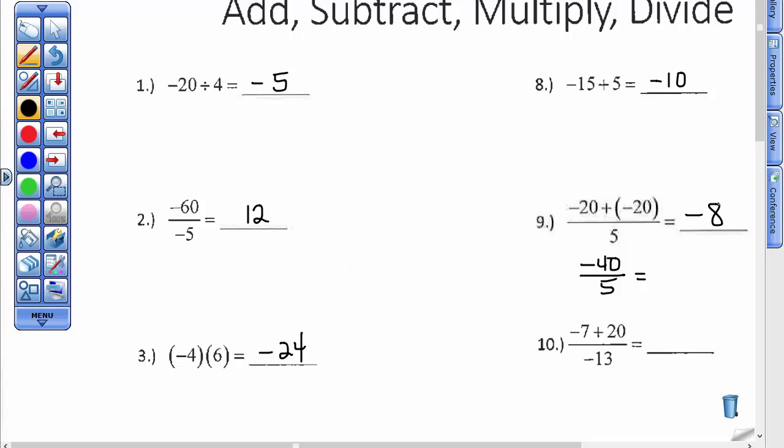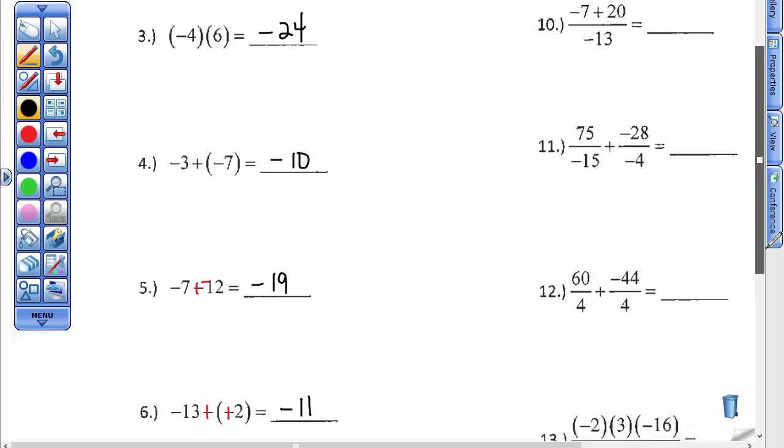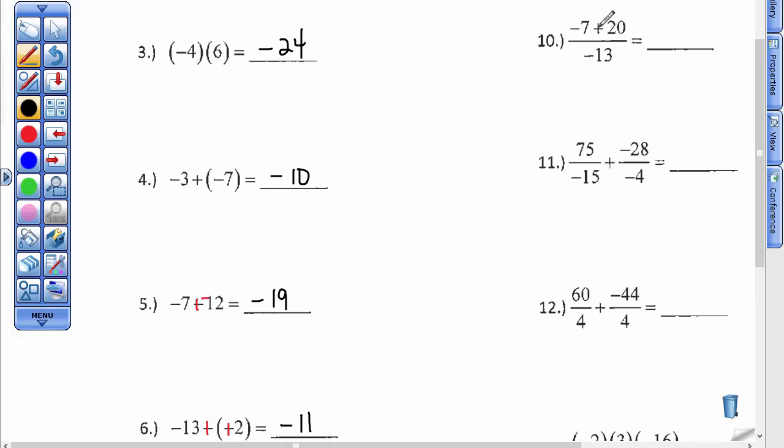Let's see, in number 10, I'm just going to go ahead and use the answer blank as my fraction bar. In number 10, I have negative 7 and I want to add 20. They have different signs. This one's negative, the 20 is positive. So 13, and since the 20 has more pull, it's a positive 13, divided by a negative 13, and a positive divided by a negative is a negative, and 13 divided by 13 is 1.